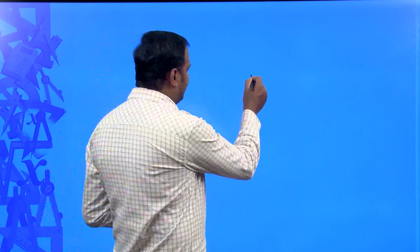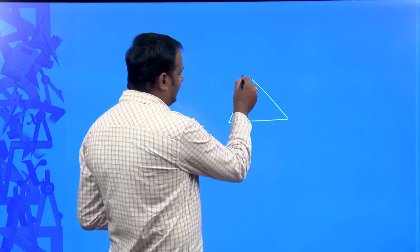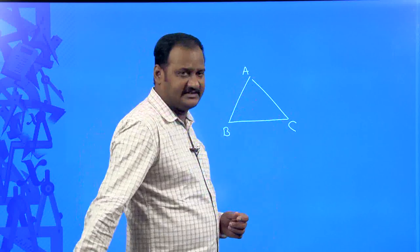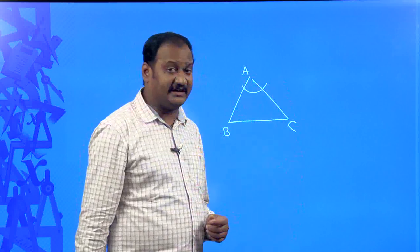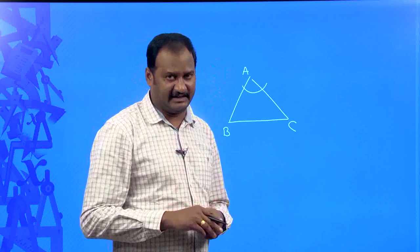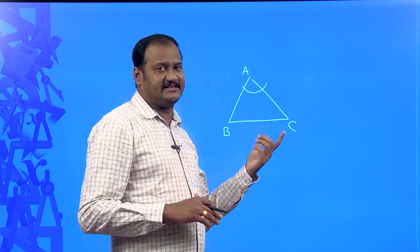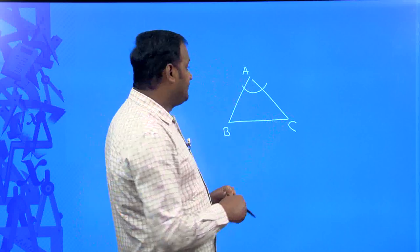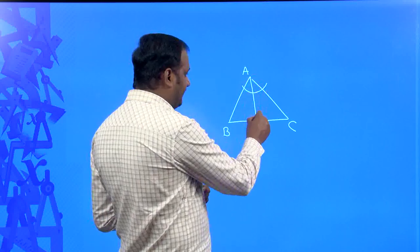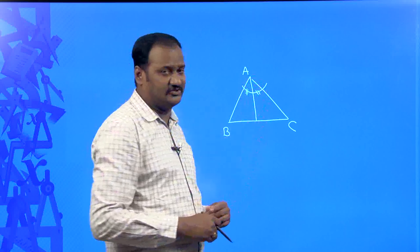Let us have a look at this. For that you need to understand the vertical angle bisector theorem. Let us take a triangle ABC. If you consider BC as the base, then the angle opposite to the base is said to be the vertical angle, and the angles connected with the base are the base angles. If you draw the angular bisector of the vertical angle, it bisects this angle into two equal parts.